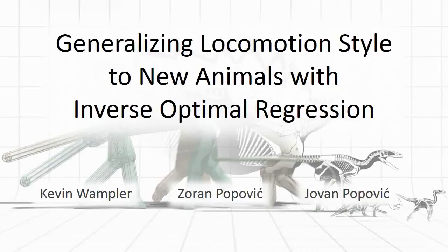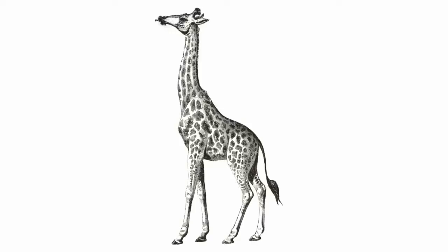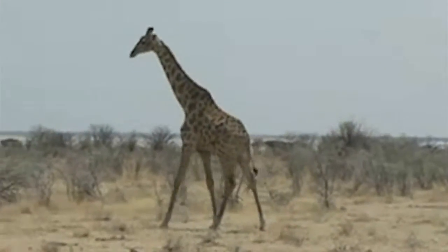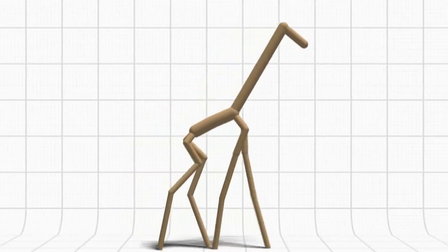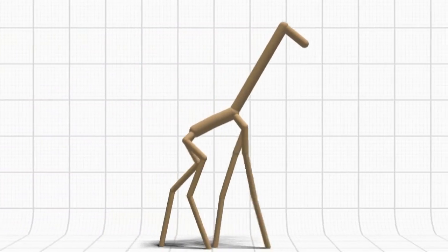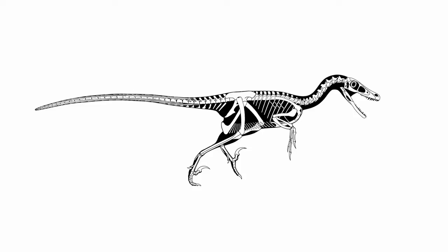Suppose you have some animal, maybe like a giraffe, and you want to animate a walk cycle for it. If it were a human, you could get motion capture data. That's possible for an animal like this, but hard. Perhaps instead you could go to YouTube, find a video of what you want, and use that as a reference. But that won't always work because you can't always get that sort of video. This project is designed to completely automatically synthesize realistic walking gaits for animals like this, for which you don't have or can't get video data.